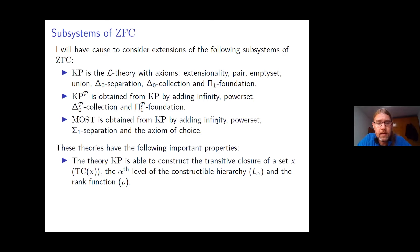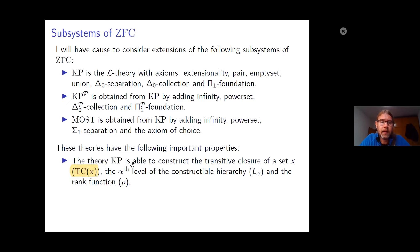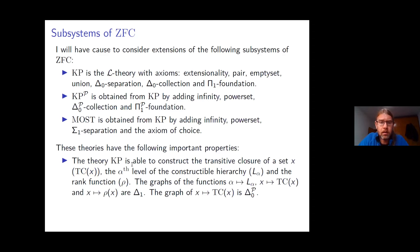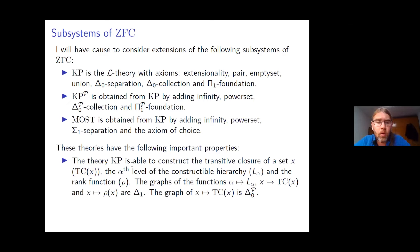KP can do Σ₁ recursions, meaning for any set X it proves X is contained in a minimal transitive set — the transitive closure of X. KP can construct for every ordinal α the α-level of the constructible hierarchy Lα, and can define the rank function on sets. Moreover, KP proves the graphs of all these functions are simply defined: the graph of α ↦ Lα, the graph of X ↦ TC(X), and the graph of X ↦ rank(X) are all Δ₁ definable. Additionally, X ↦ TC(X) is Δ₀ᴾ definable.